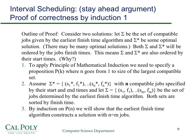The proof for interval scheduling uses what's called a stay-ahead argument. This is useful for proving greedy algorithms correct in many different situations and problems. It doesn't always work, but generally speaking it's a good candidate to try. It usually follows the same pattern — you can do it by mathematical induction or by proof by contradiction. In this case, I'm going to use mathematical induction.